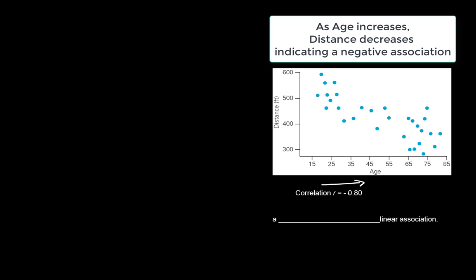This means the association is negative. The correlation coefficient gives us both strength and direction of the relationship.